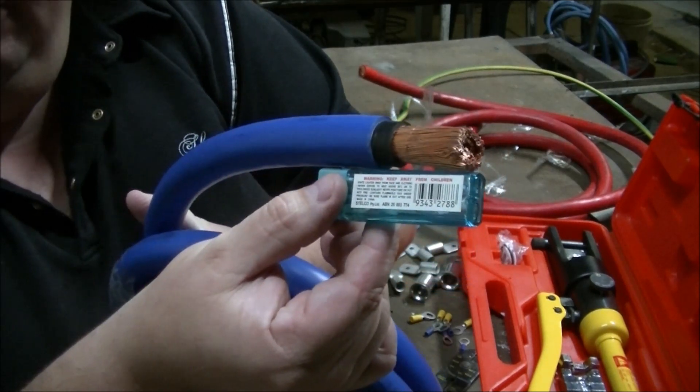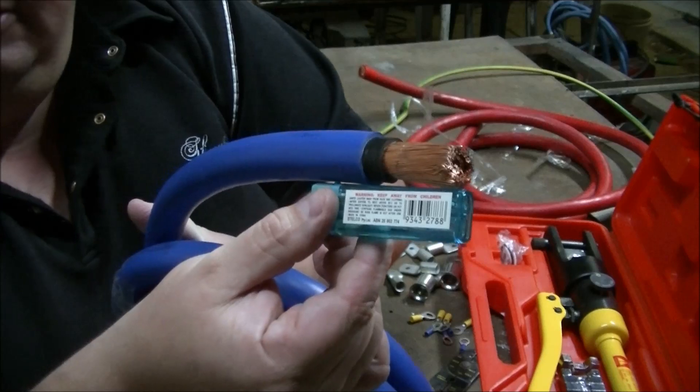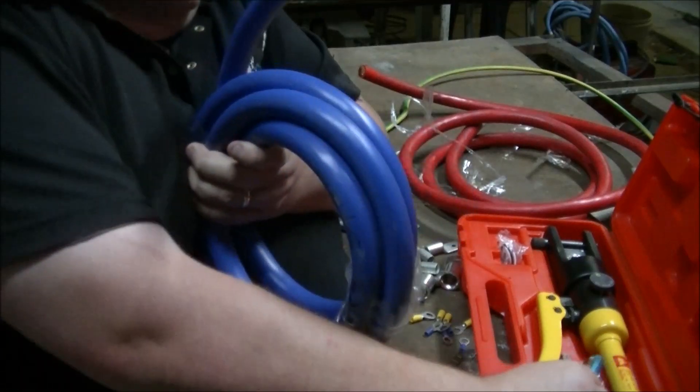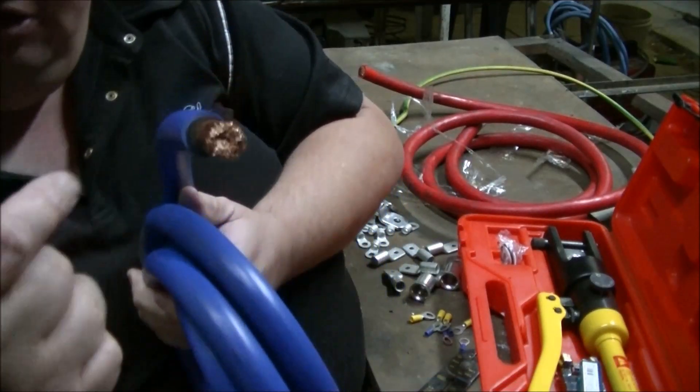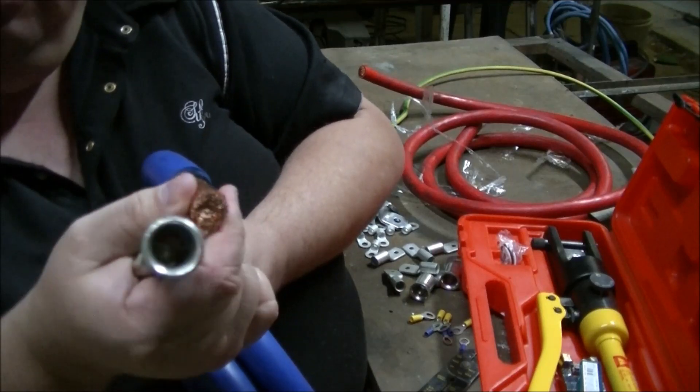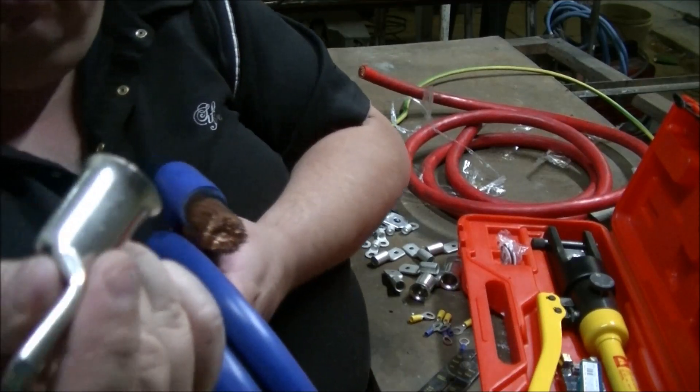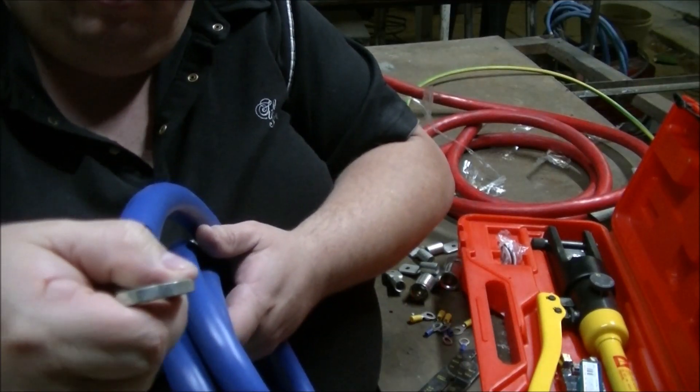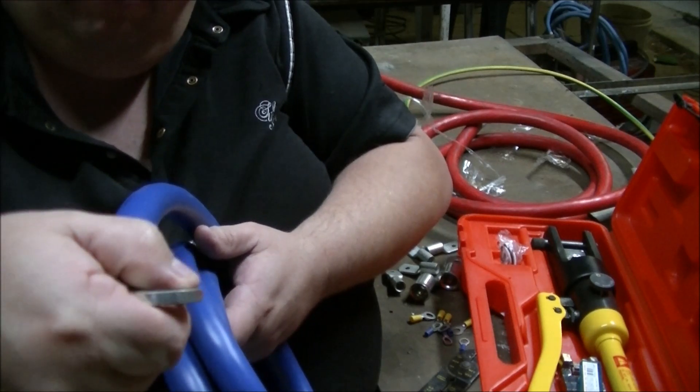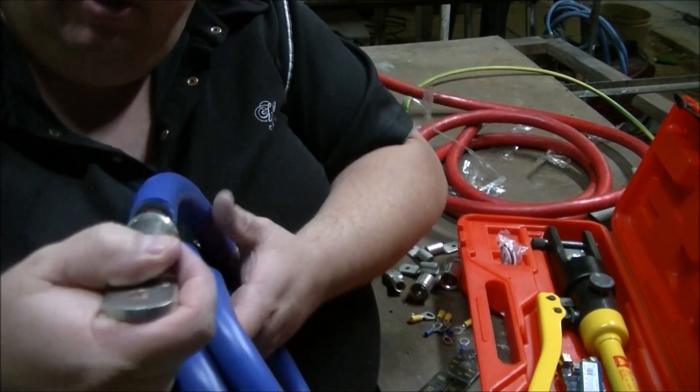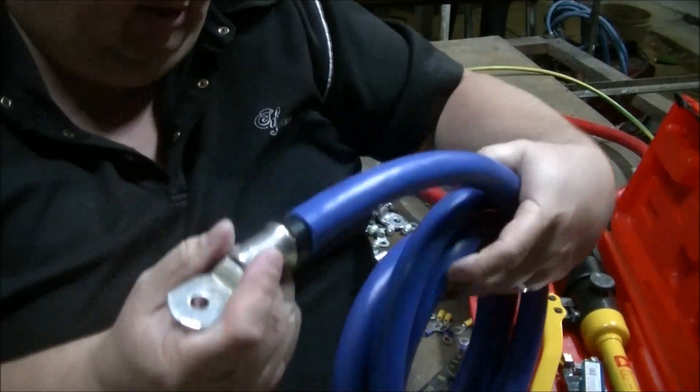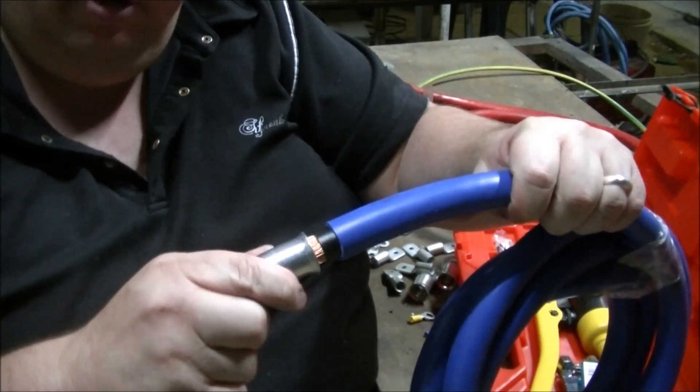So basically what you do, you strip the end of the wire off and then you get your crimp. You want to try not to miss any of the strands and it's got to fit on there pretty snug.